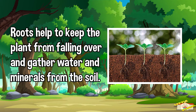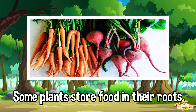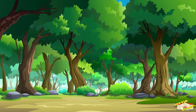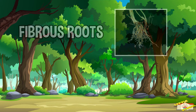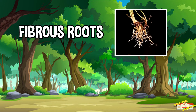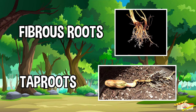Finally, roots. The roots of a plant grow underground. Roots help to keep the plant from falling over and gather water and minerals from the soil. Some plants store food in the roots. The two major types of roots are fibrous roots and tap roots.